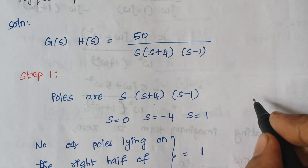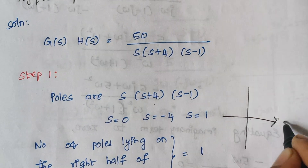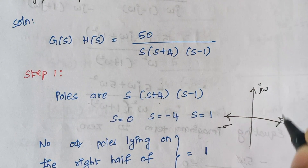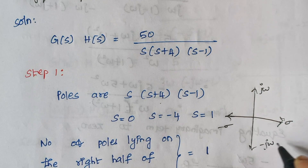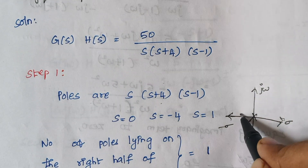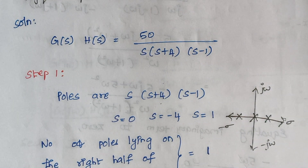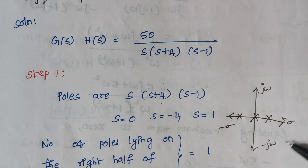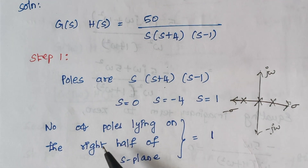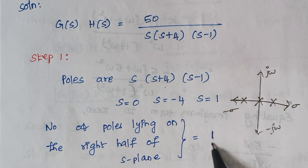Here is our s-plane with the real axis and imaginary axis. When you locate the poles, we have one pole at the origin, another at s = −4, and another at s = 1. The pole lying on the right hand side of the s-plane is only one. So the number of poles lying on the right half of the s-plane, P, is equal to one.